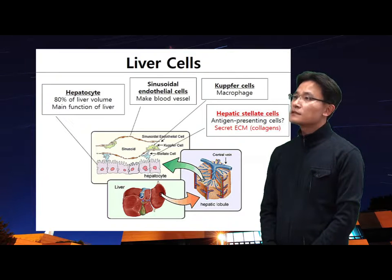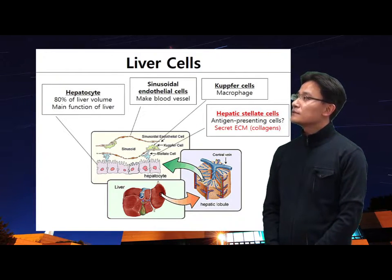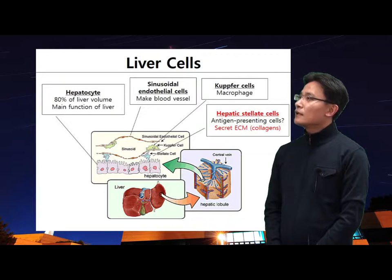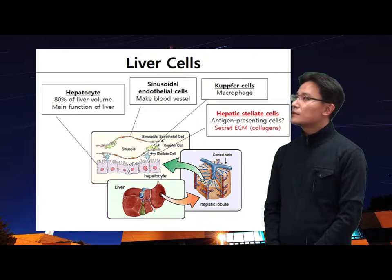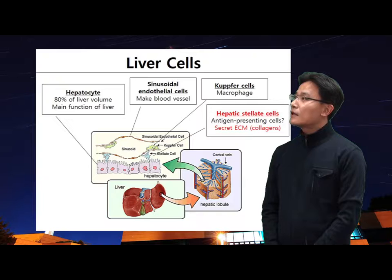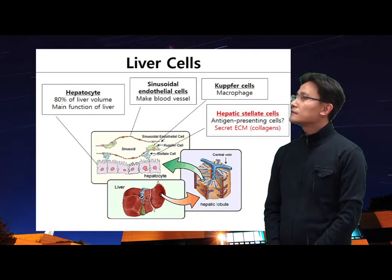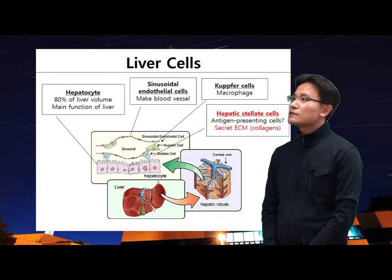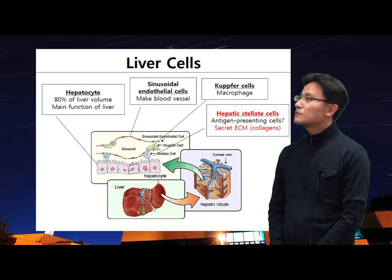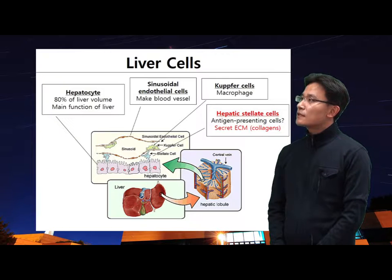Kupffer cells are located in the wall of the sinusoid and act as macrophages. Hepatic stellate cells are found in the space between the sinusoid and hepatocytes. In the normal liver, the role of hepatic stellate cells is unclear, but recent evidence suggests a role as antigen-presenting cells. When the liver is damaged, stellate cells can secrete extracellular matrix collagen.